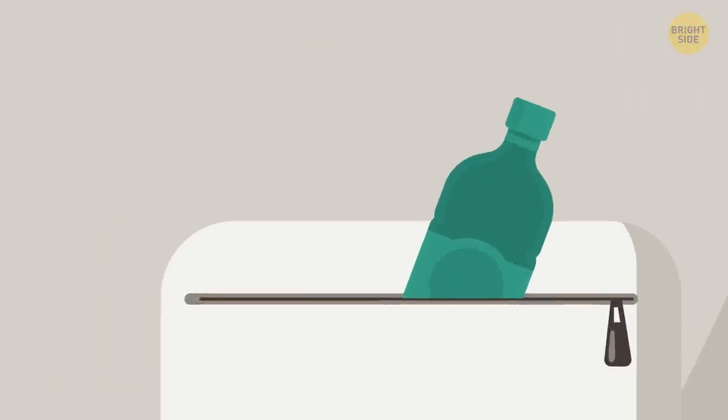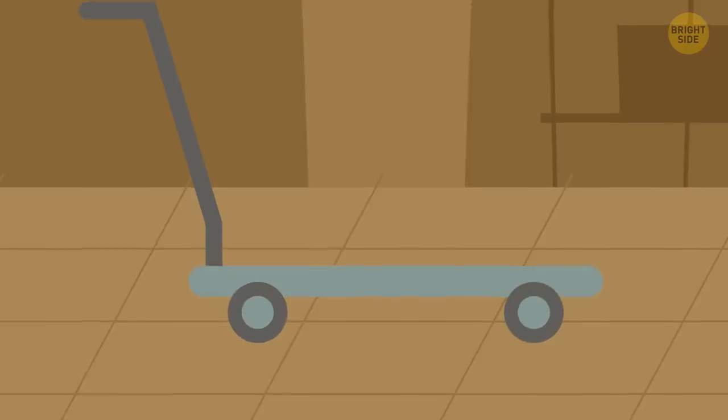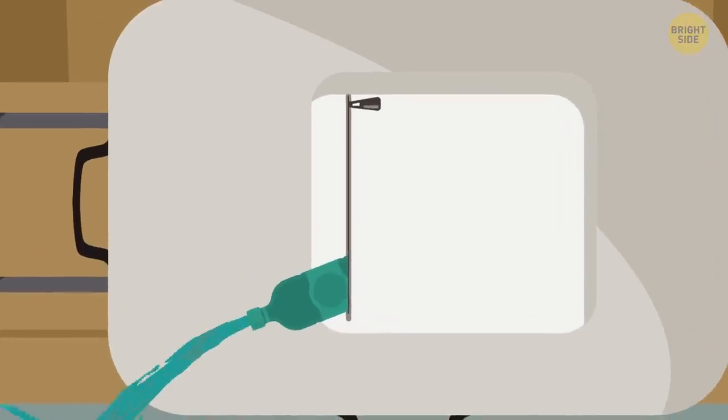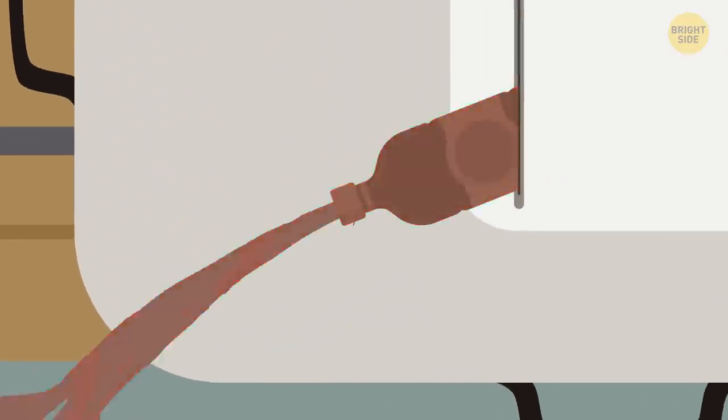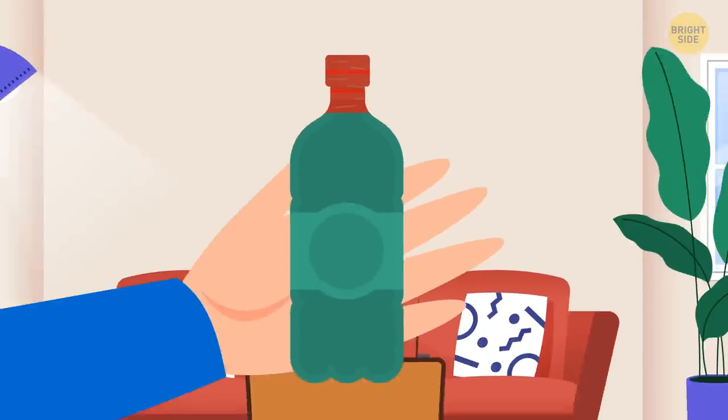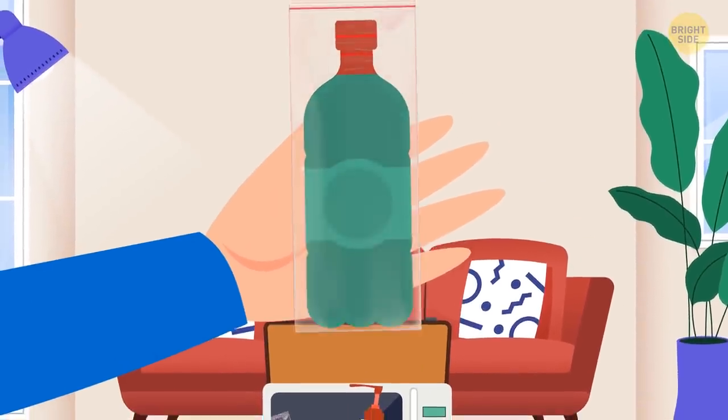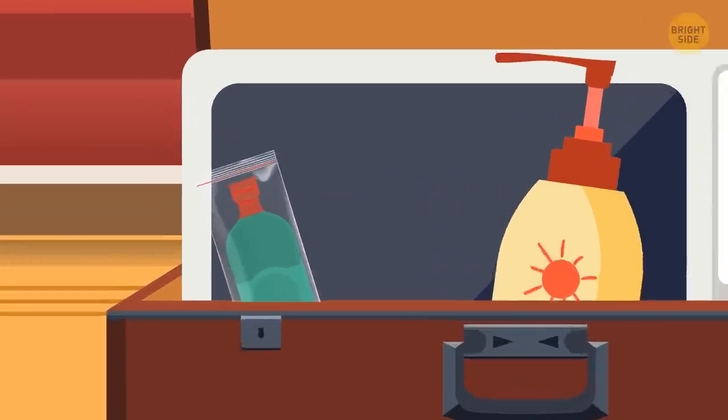Don't put any liquids in the front pocket or on top of your things. When baggage handlers toss the bag on the cart, that shampoo or lotion bottle can get damaged and leak. Cover liquid bottles with duct tape and put them in a separate sealable plastic bag. Keep that bag in the main compartment.